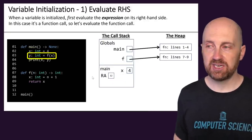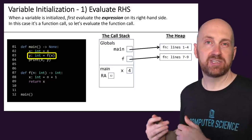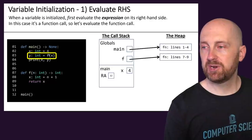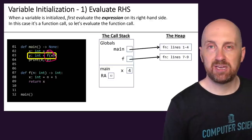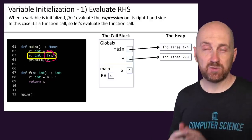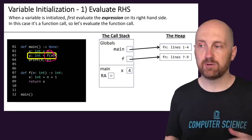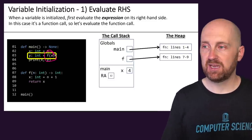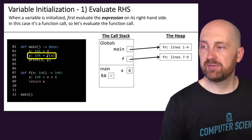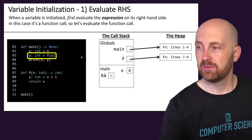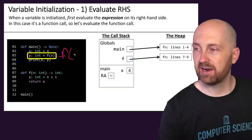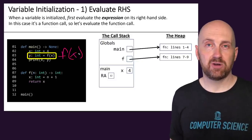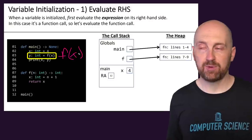On the next line, we've got a more complex statement — another initialization statement. When we don't have just a literal value on the right-hand side, our first job is to evaluate the right-hand side, because we need it to be a single value. We need to evaluate this expression to ensure it returns an integer. We've got a function call expression here — we're calling the function f(x).